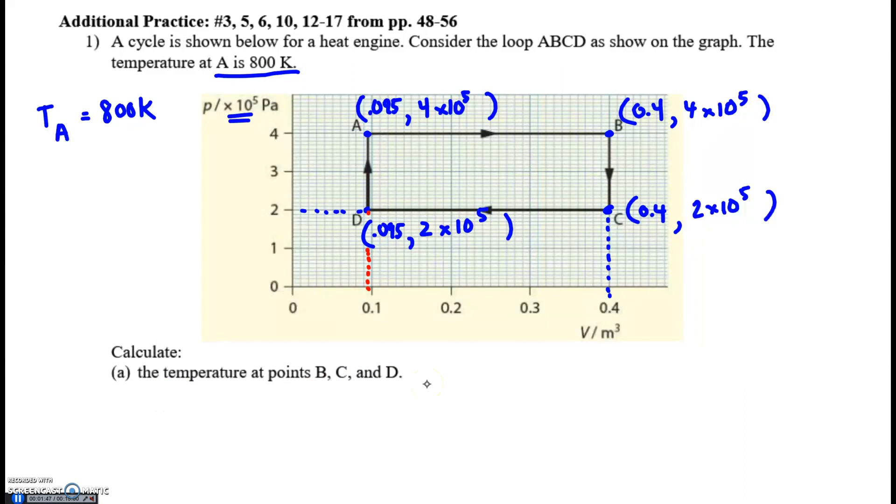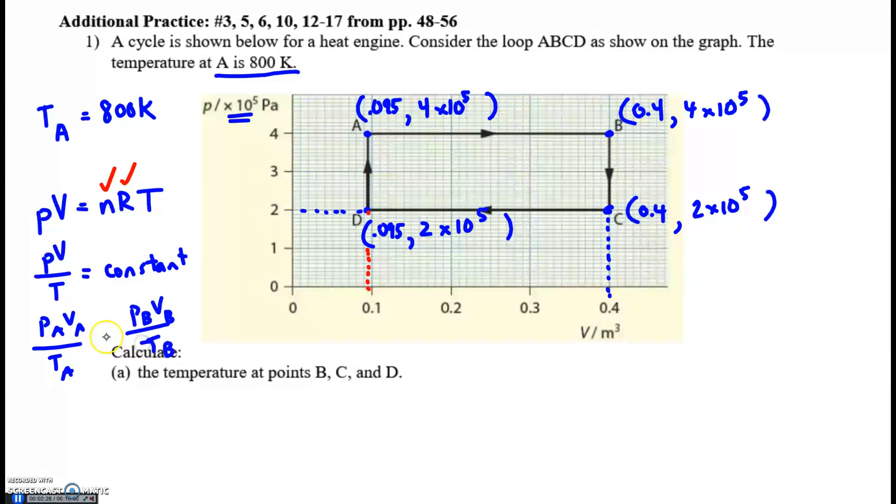Find the temperature at B, C, and D. If we think about the equation of state of an ideal gas, PV = nRT, the number of moles is constant. We assume gas isn't leaking into or out of the engine. R is always constant. So if we divide both sides by T, we get PV/T = nR, which is a constant. That means you take this ratio for point A and any other point, and they must equal each other.